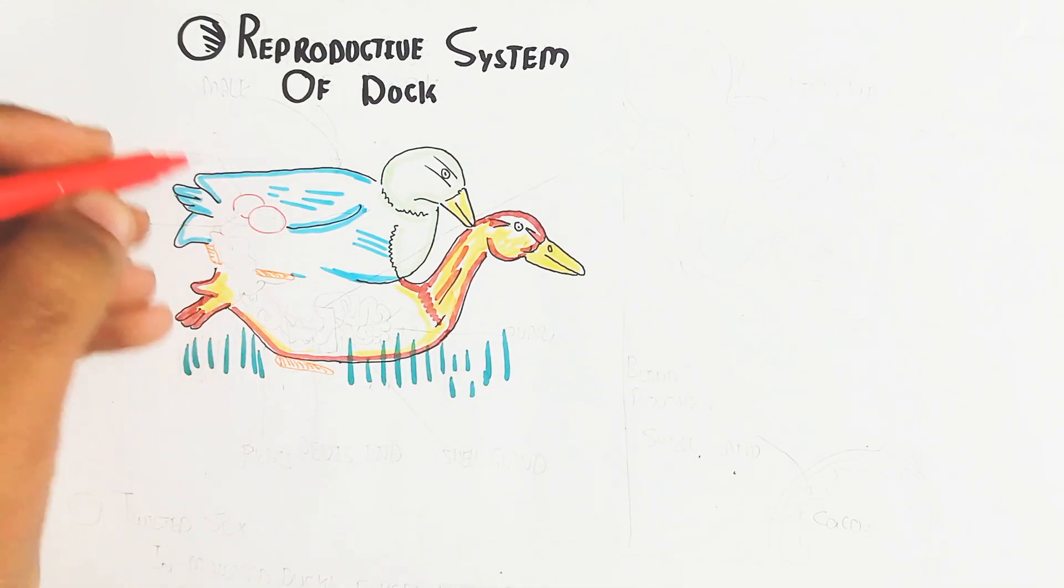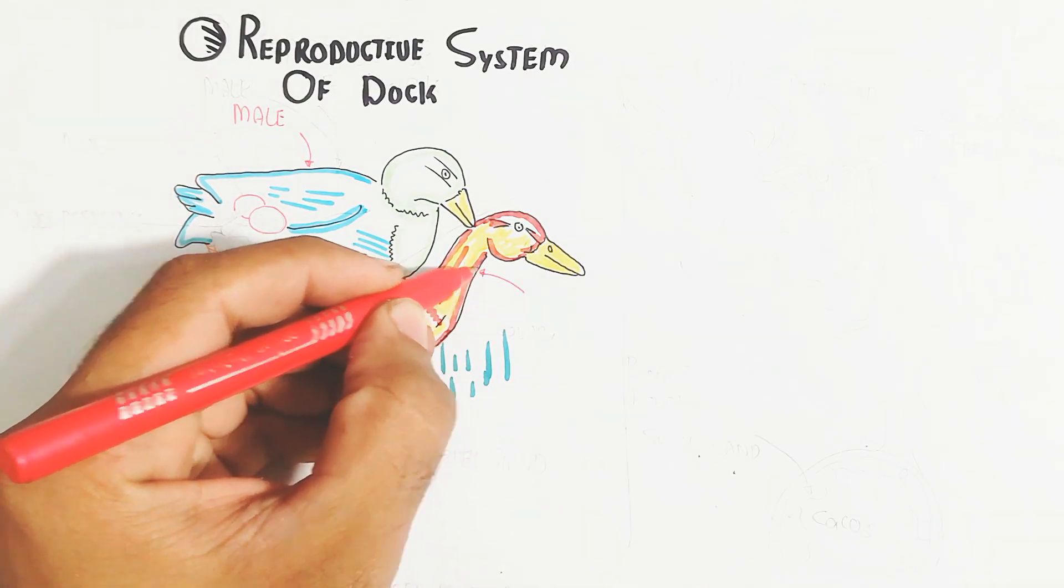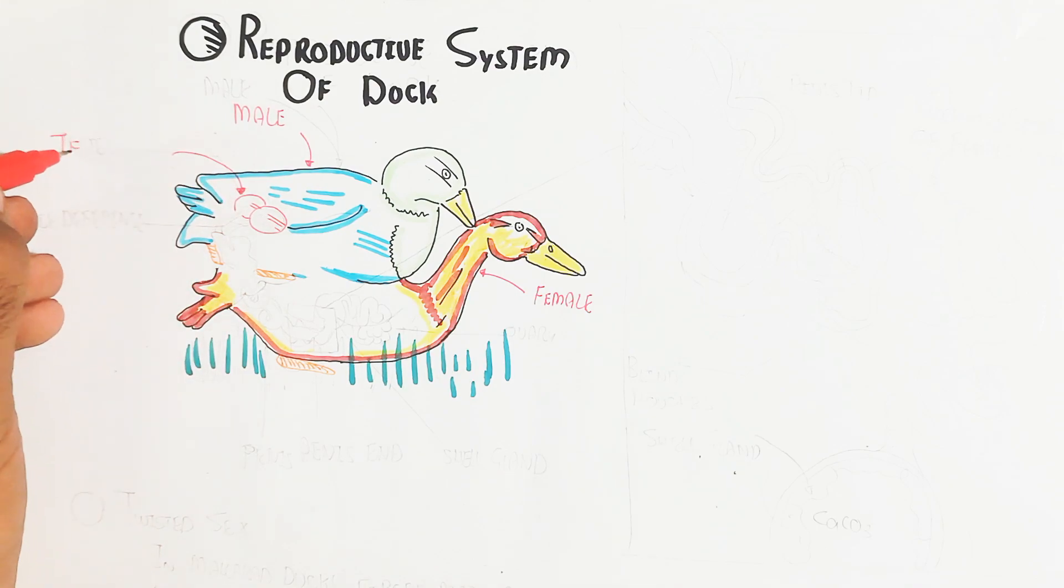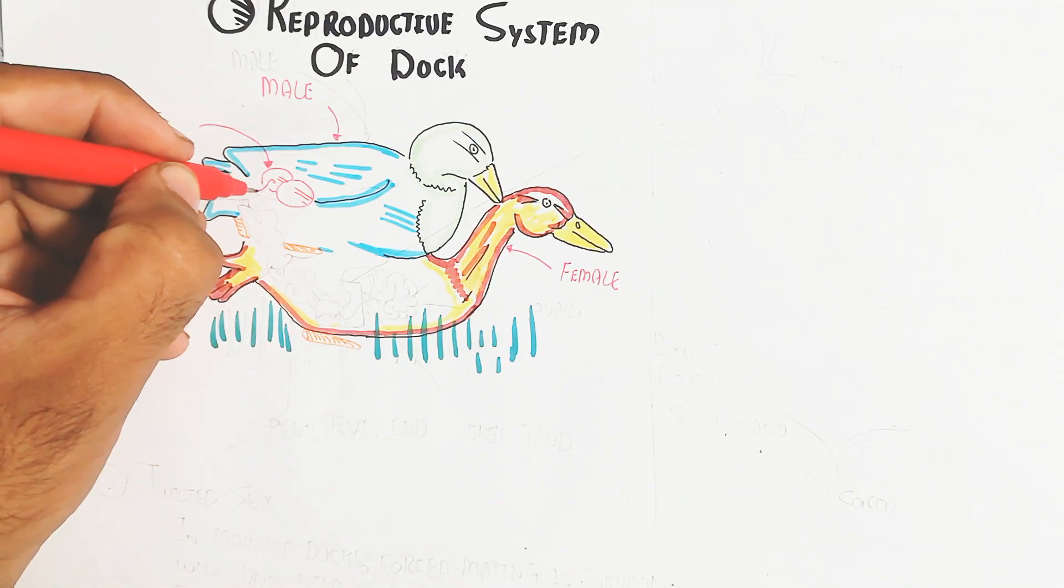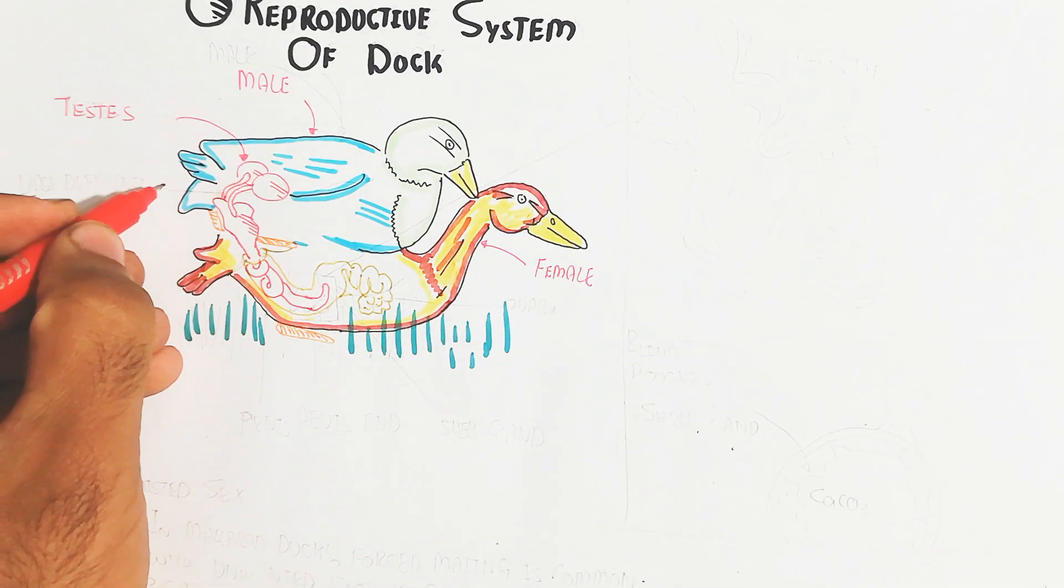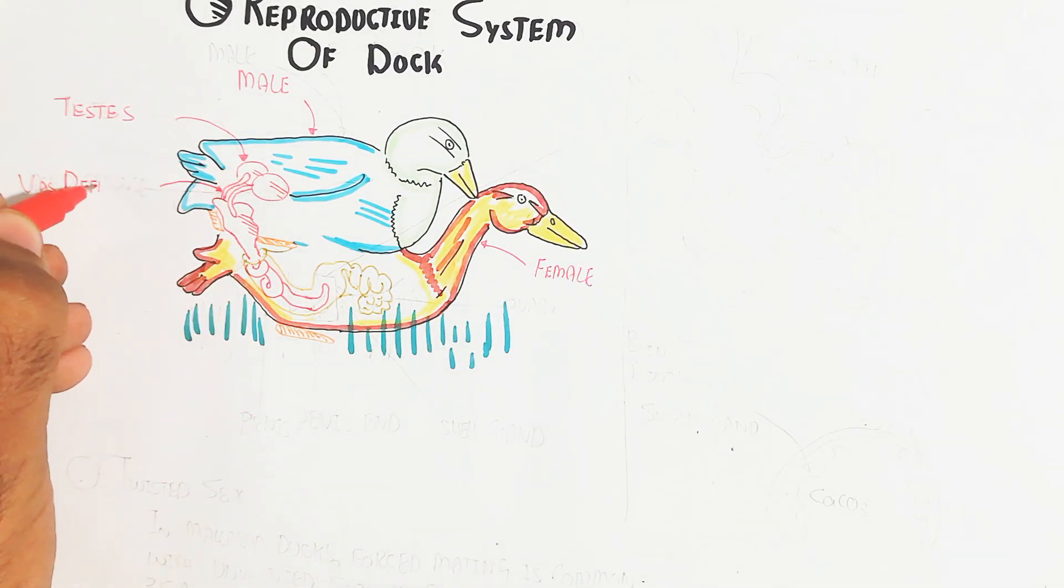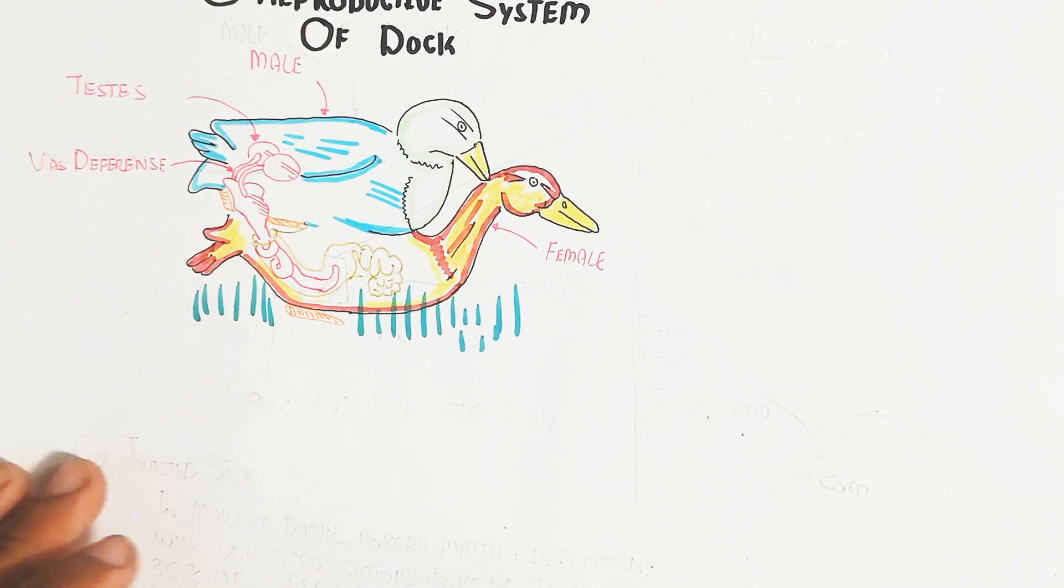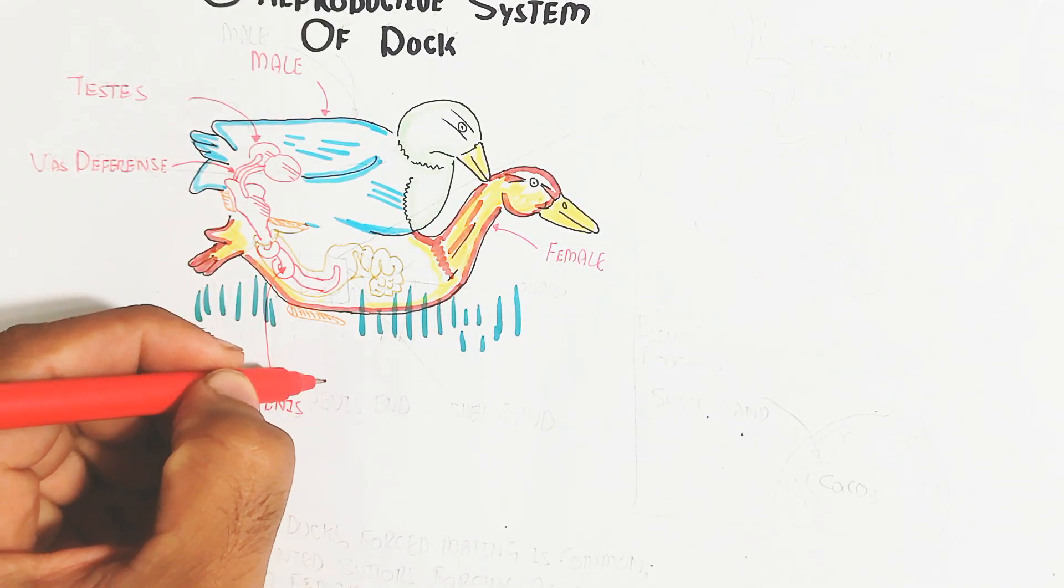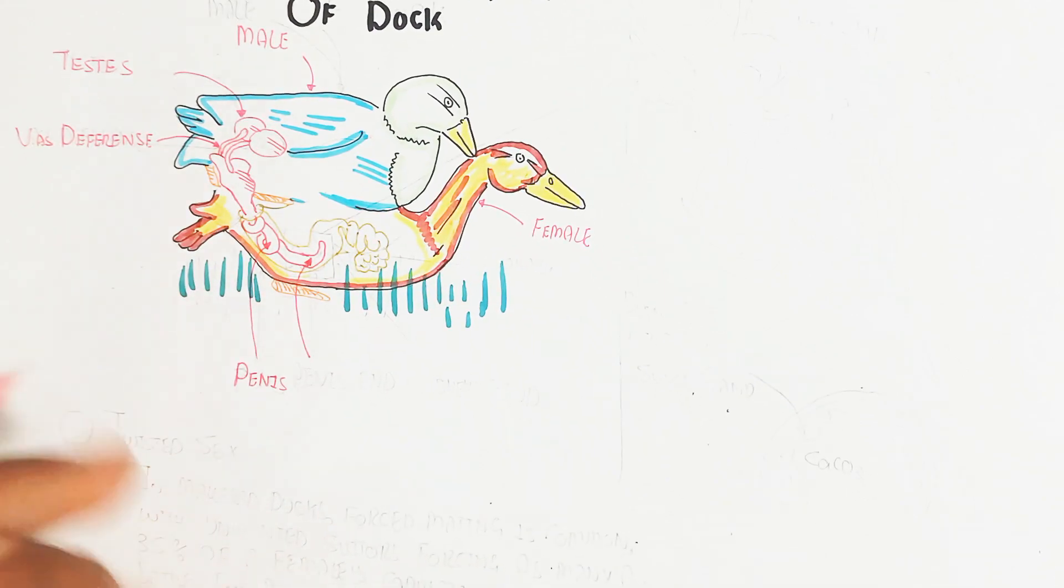The male contains a penis. Here is the female and this is the male. The female contains ovary while the male contains testes, and this is the copulatory organ which is the penis. This is more long, a vast difference used for insertion of sperm.